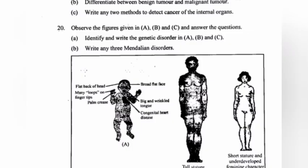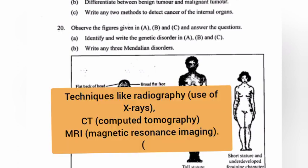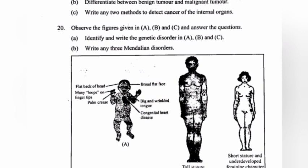c) Write any two methods to detect cancer of the internal organs. Answer: Techniques like radiography – use of X-ray; CT – computerized tomography; MRI – magnetic resonance imaging.